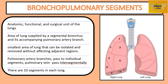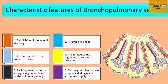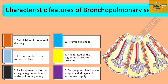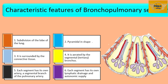There are 10 segments in each lung. The characteristic features of bronchopulmonary segments are: one, it is a subdivision of a lobe of the lung; two, it is pyramidal in shape with the apex directed towards the hilum and the base towards the surface of the lung; three, it is surrounded by connective tissue; four, it is aerated by a segmental or tertiary bronchus; five, each segment has its own artery — a segmental branch of the pulmonary artery; and six, each segment has its own lymphatic drainage and autonomic supply.